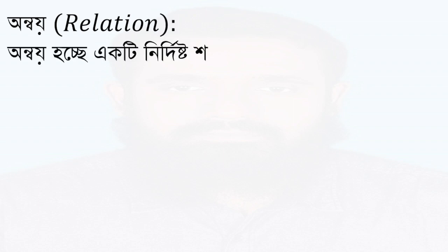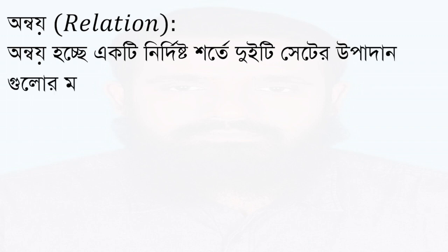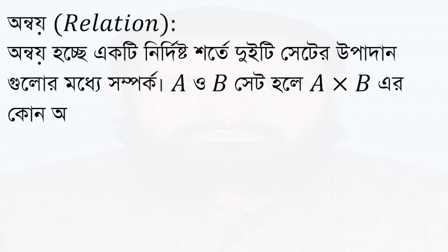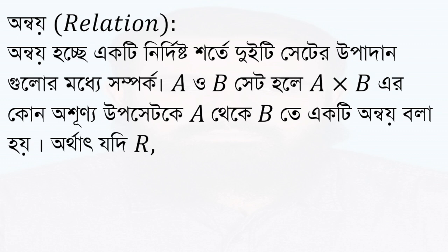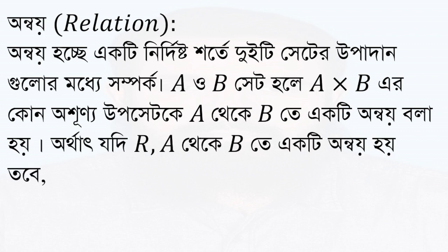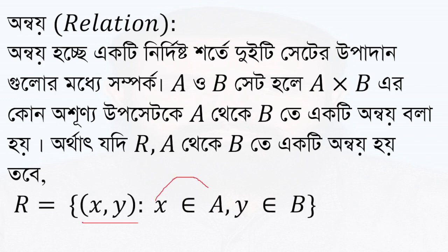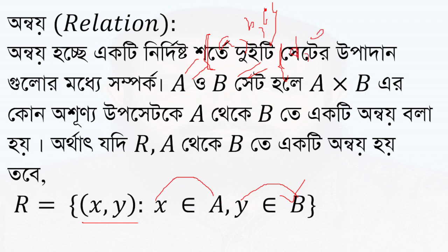Ardhai huche eqe eqe nidduishto shartte dutti sete eqe uupadhan gulon mdde shamparg — a relation is a correspondence between elements of two sets. A is the same as {A, B, C} and B is the same as {A, B, C}, second bracket is {D, E, F}.